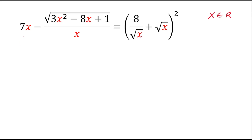Hello students. In this video we are going to solve: 7x minus square root of 3 times x squared minus 8x plus 1, divided by x, equals 8 over square root of x plus square root of x, whole square. Here we will find out the value of x, and x belongs to real numbers.